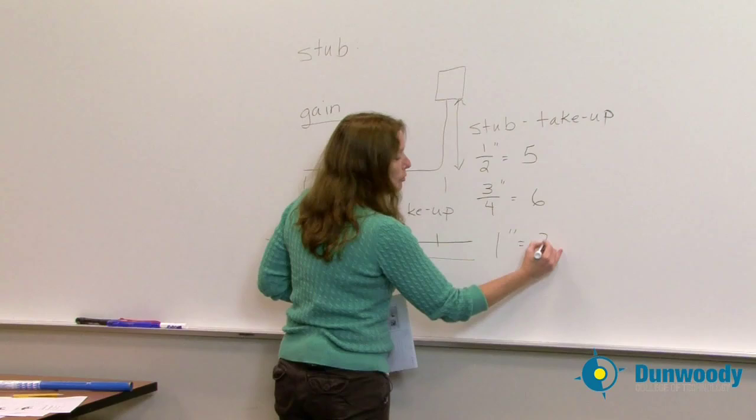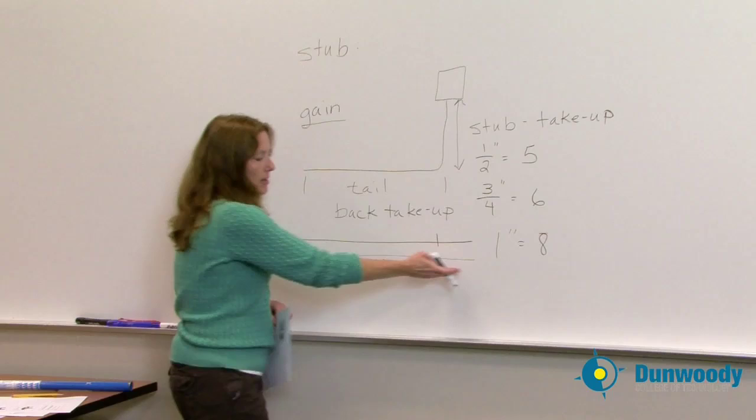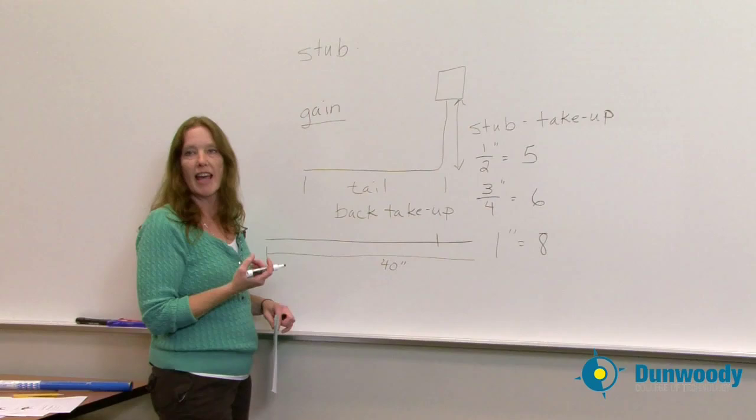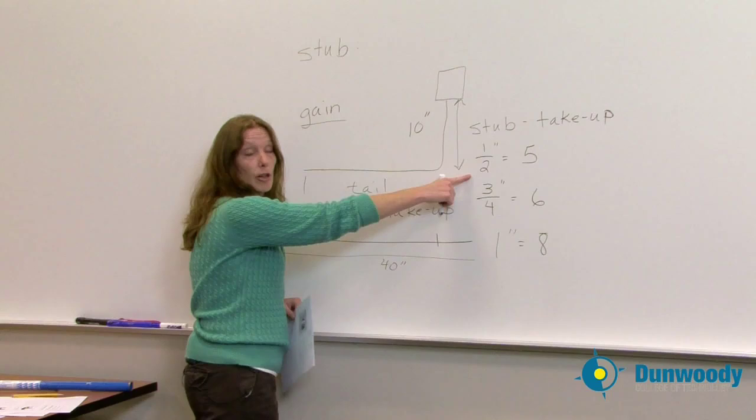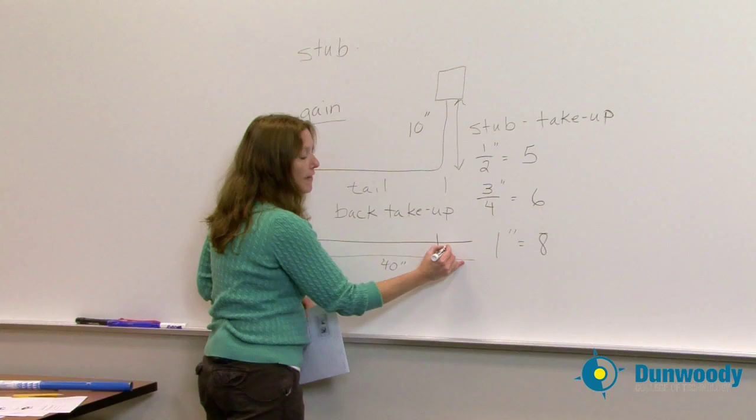What that means is I have to, when I bend my conduit and when I mark my conduit, I'm going to subtract that value from the actual value that I want. So if I want a 10 inch stub, so to speak, from here to here, I'm going to subtract, if I'm bending half inch conduit, I'm going to subtract 5 from that, and I'm going to mark 5 inches off the end of the conduit in order to bend it.